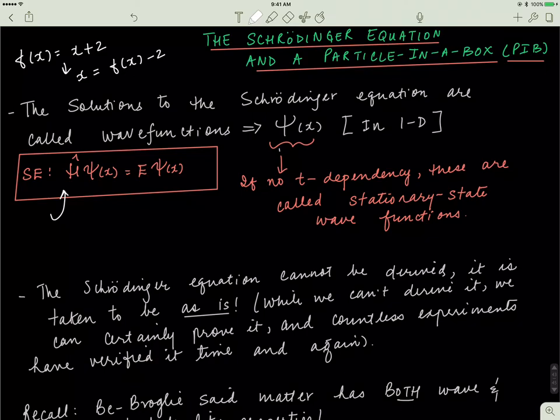Another important thing to mention is that the Schrödinger wave equation cannot be derived. When Schrödinger came up with the equation, he probably fit his equation to the data. The important thing is that just like we can't derive F equals ma, we can't derive the Schrödinger wave equation. But what we can do is show that the Schrödinger wave equation is true and that it arises naturally from other equations.